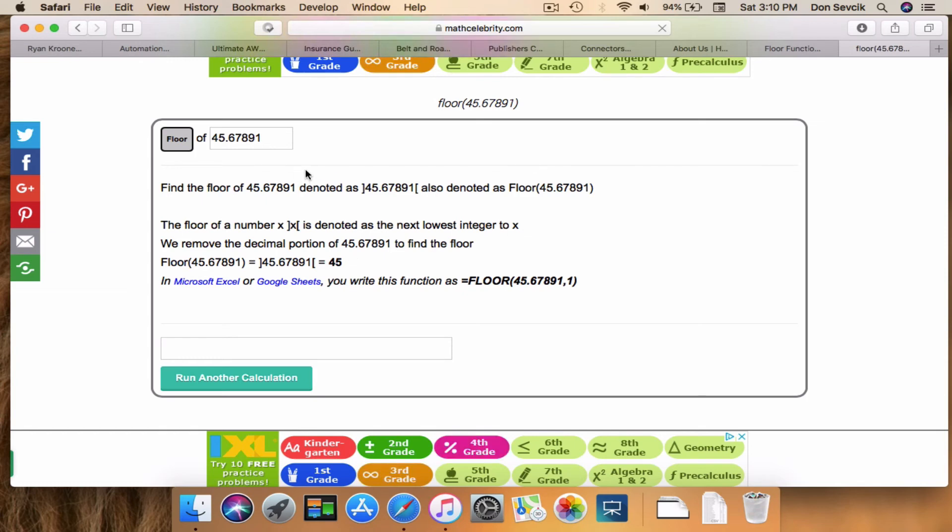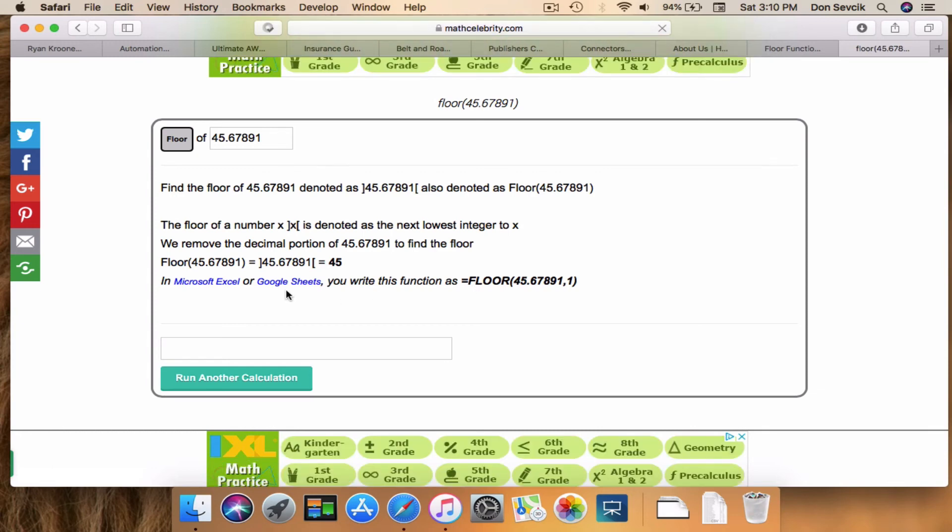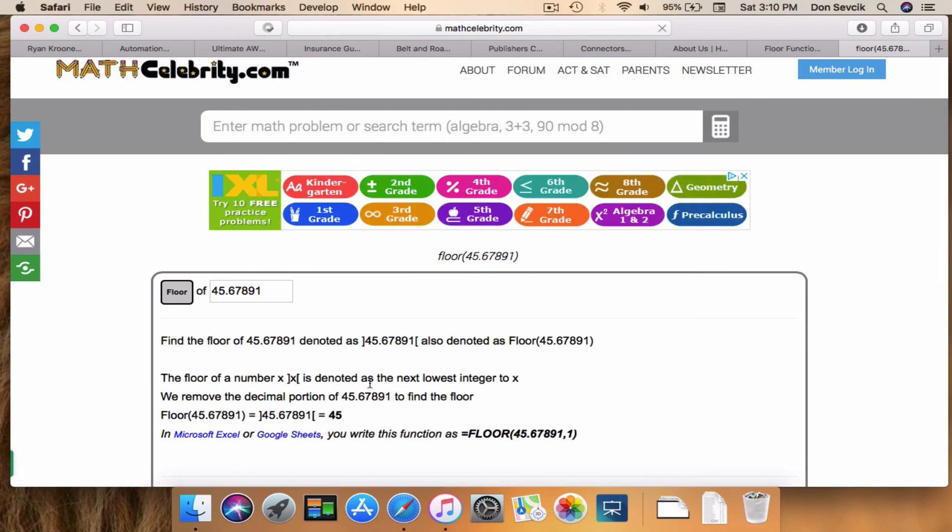And as a bonus on this calculator, no matter what number you choose, we're also going to show you how to find the floor in Excel and Google Sheets. So all you do is just type floor and your number. You can do parentheses if you want, and it will run the floor steps like we did in our presentation and give you the floor of your number.